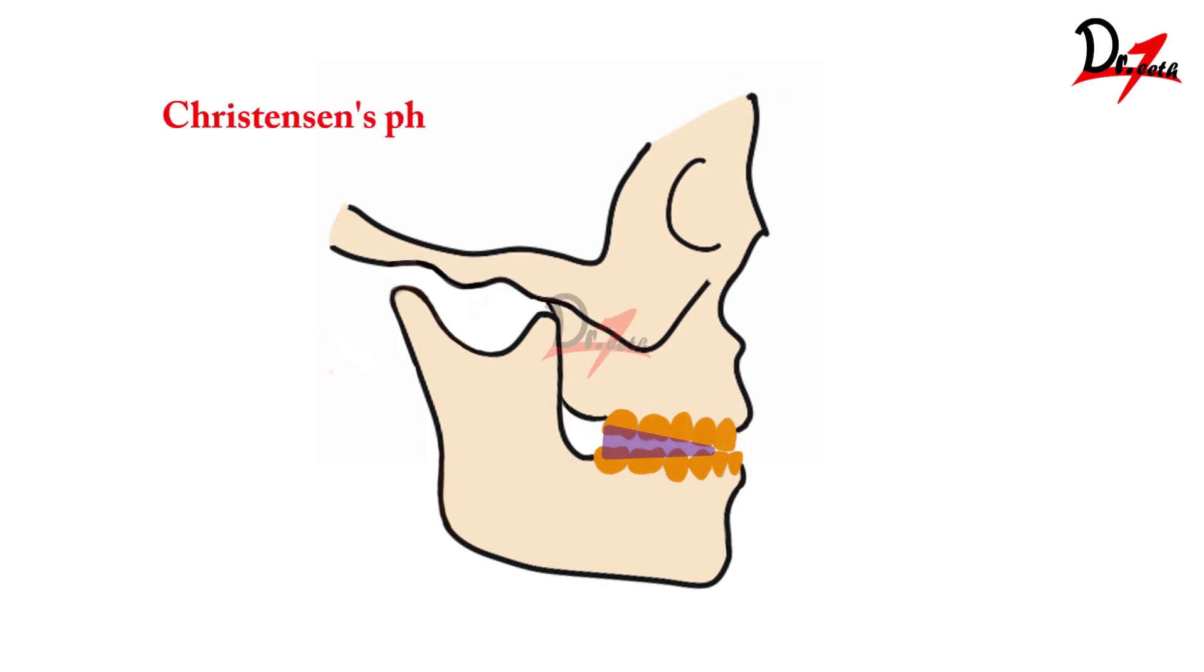That is Christensen's phenomenon. But if we have a similar thing in a complete denture, what will happen? If you have the same space, the denture will lift. The lower denture will lift up, the upper denture will lose retention.